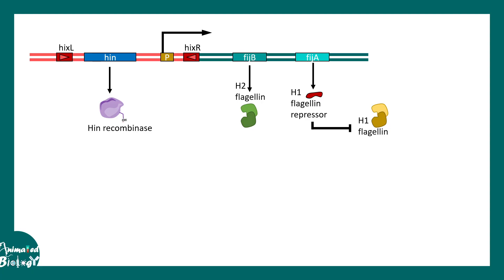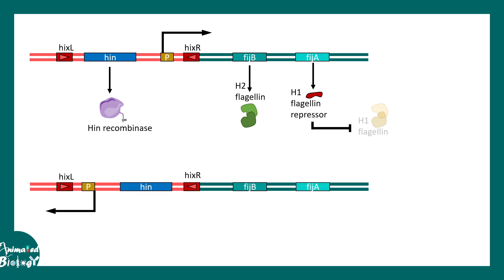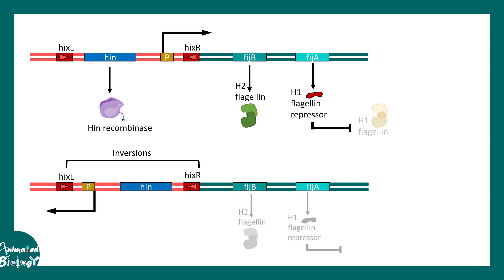Due to hin recombinase-mediated site-directed inversion, the overall orientation of the hin recombinase and the promoter site can be altered. You can appreciate that the orientation is now inverted. As a result, the fljB and fljA genes are very far apart from the promoter region and cannot be regulated by it, so H2 flagellin and H1 flagellin repressor are not produced. By default, H1 flagellin is now expressed. By changing the sequence orientation through inversion, the bacteria can decide whether to express H2 or H1 flagellin — a great example of how site-directed recombination can regulate transcriptional outcomes.